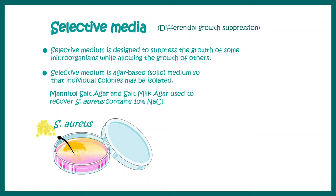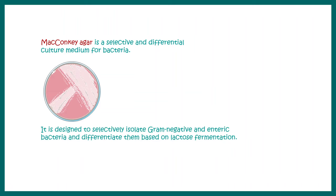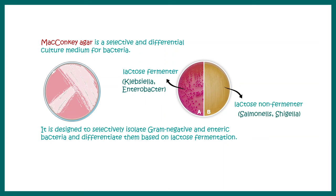MacConkey agar is an example of media that is both selective and differential. It is designed to isolate gram-negative and enteric bacteria and differentiate them based on lactose fermentation. In MacConkey agar, all lactose fermenters produce a pink-colored colony, such as Klebsiella and Enterobacter, whereas lactose non-fermenters such as Salmonella and Shigella produce a yellow colony. Based on color, they can be differentiated.